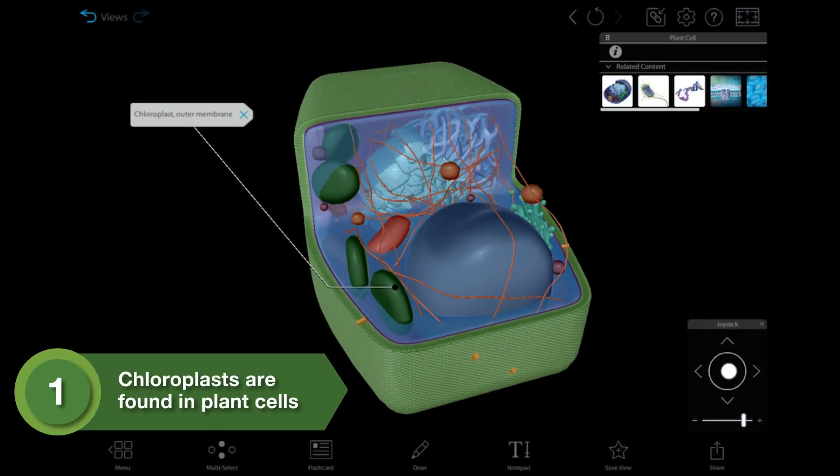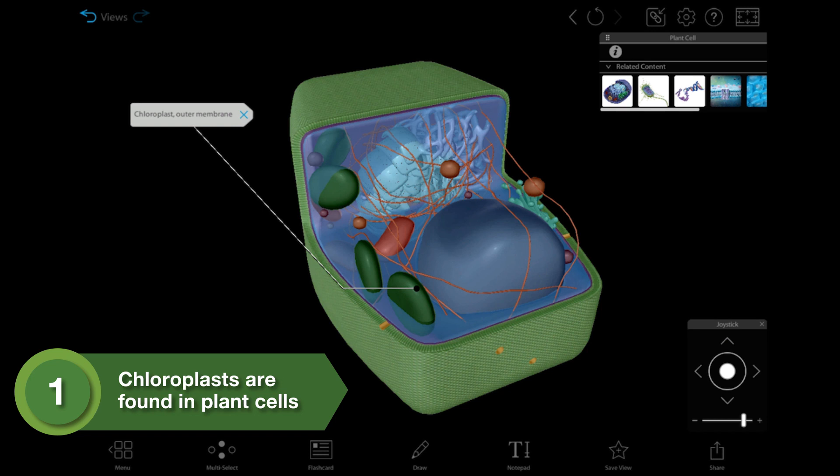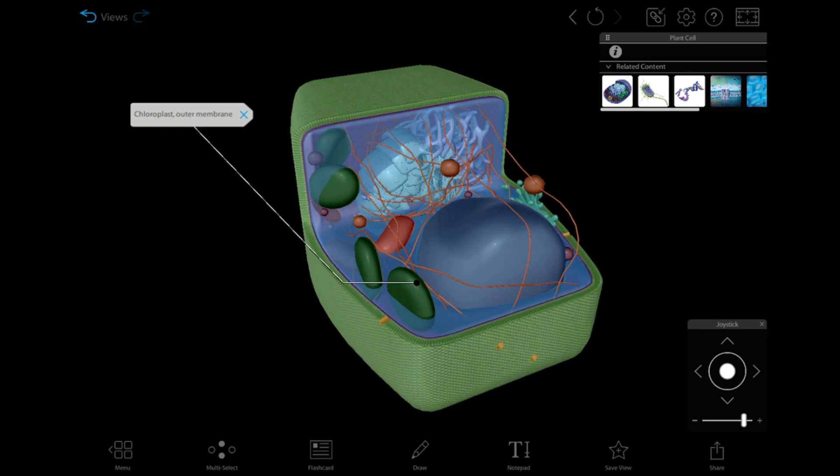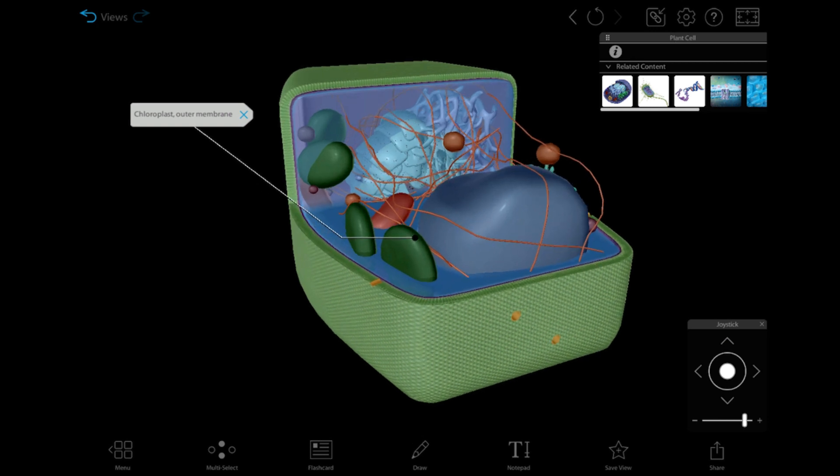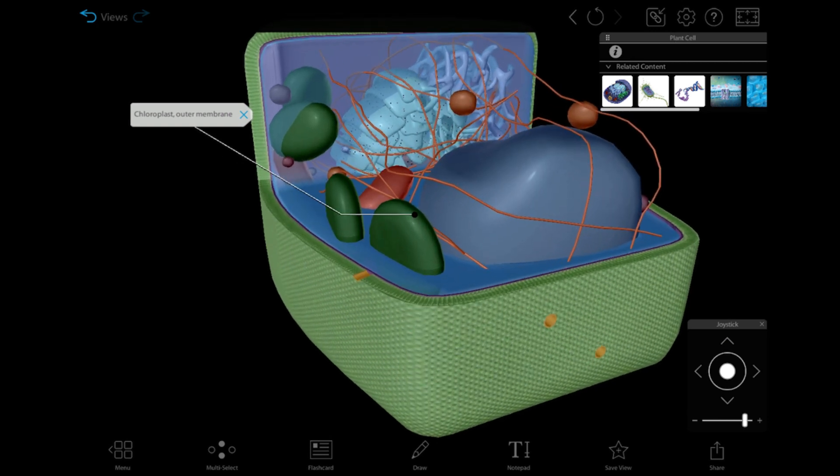Chloroplasts are membrane-bound organelles found in the cytoplasm of plant cells. A plant cell usually has between 1 and 100 of them. Chloroplasts are unique to the eukaryotic cells of plants and other photosynthetic organisms, like algae.